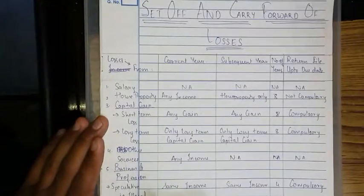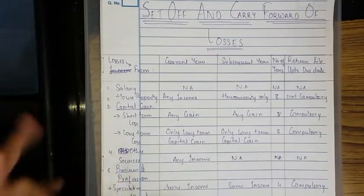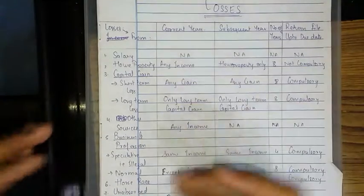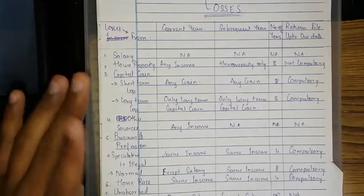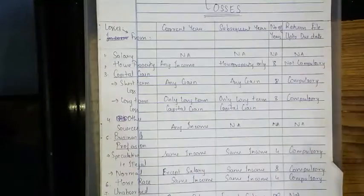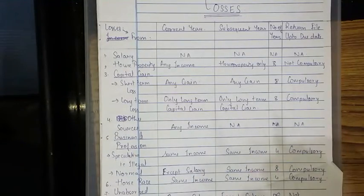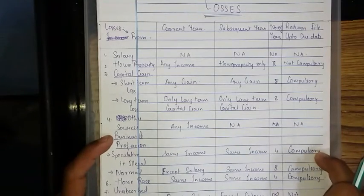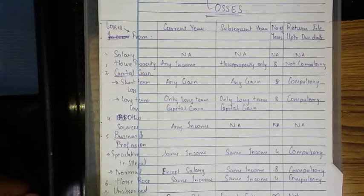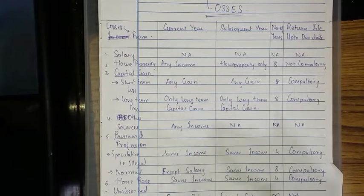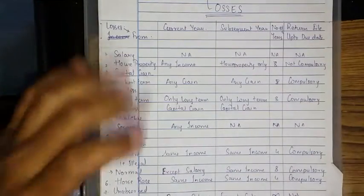Losses from business and profession — speculative business, which is considered an illegal or suspect business. Speculative business losses can be deducted in the current year only from speculative business income, and in subsequent years also only from speculative business income, but the benefit is available for only 4 years — because it is speculative. Return filing up to the due date is compulsory, because if speculative income is not reported, the government won't know, and the assessee won't be able to set off the loss. This provision ensures all assessees pay tax on their income.